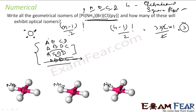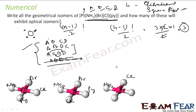Now assigning actual ligands: A = ammonia (NH3), B = glycine, C = chlorine (Cl), D = pyridine (py). The three isomers are: (1) NH3, glycine, Cl, py; (2) NH3, py, Cl, glycine; (3) NH3, Cl, py, glycine. So we have three geometrical isomers for this square planar Pt complex.